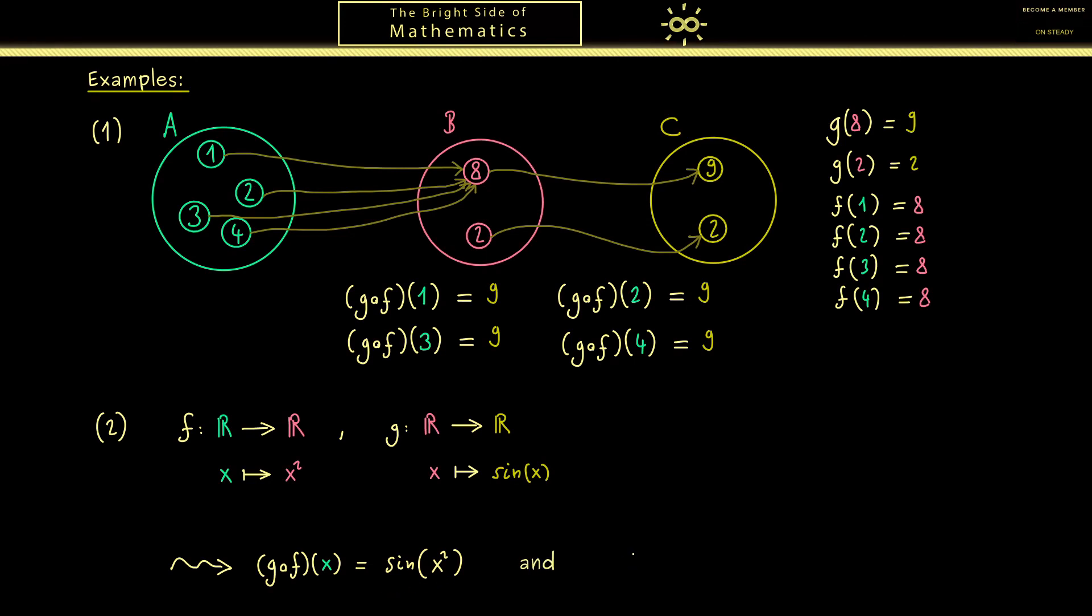However in this example also the other way makes sense. So we can form F after G. Now if we put an x into this function we first apply the sine function. And then we square the result.